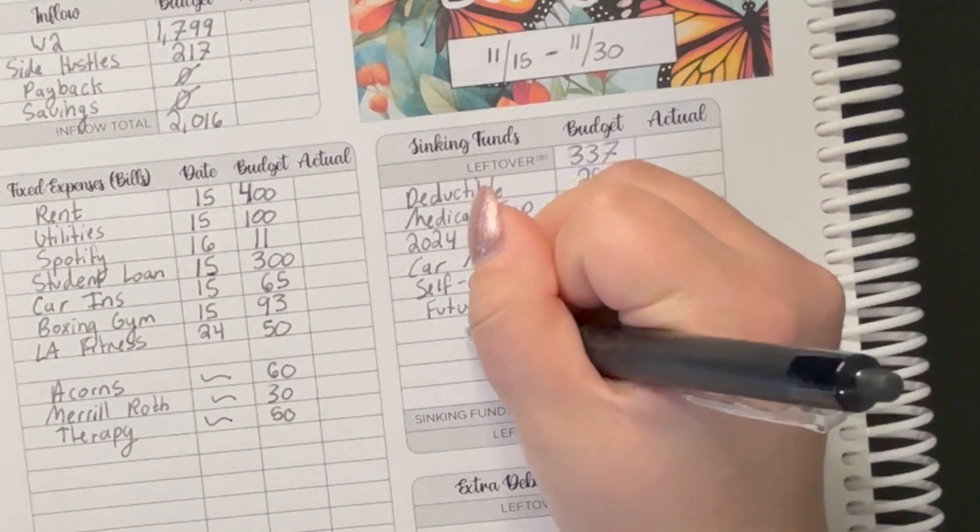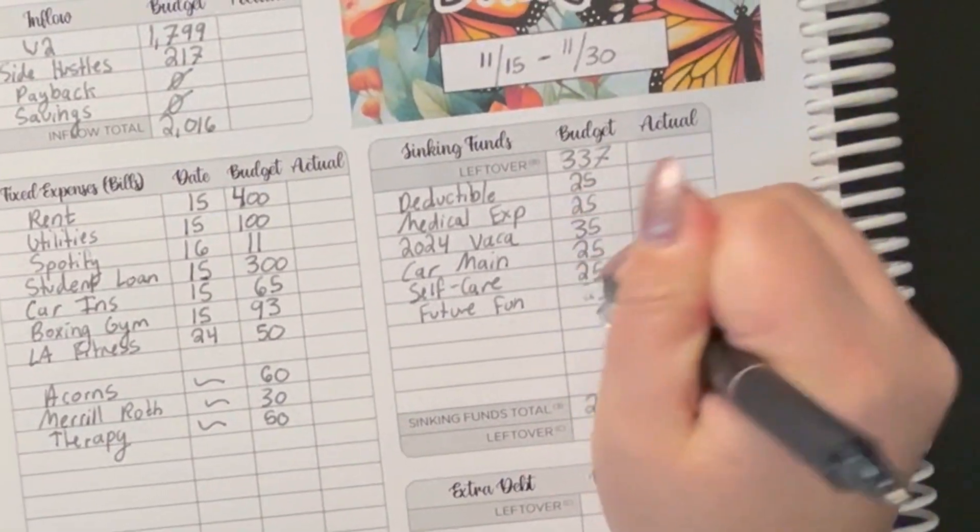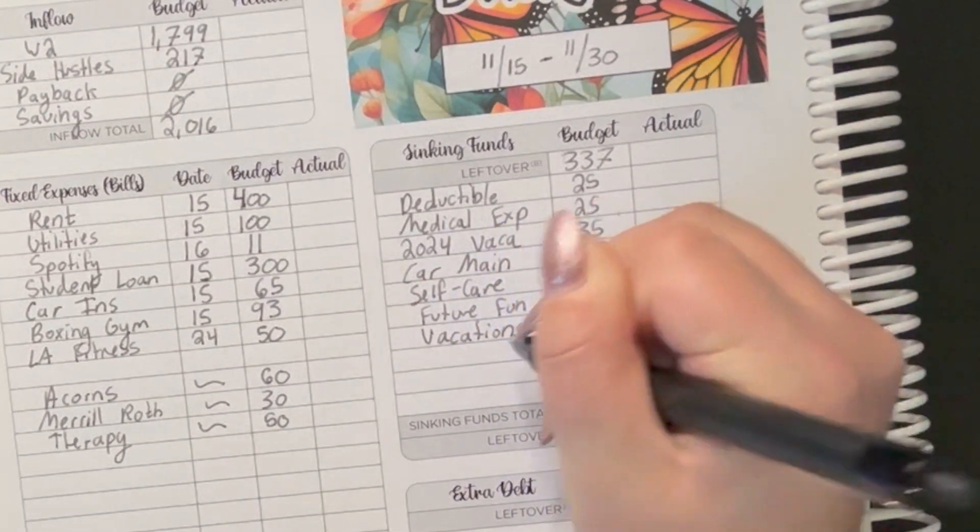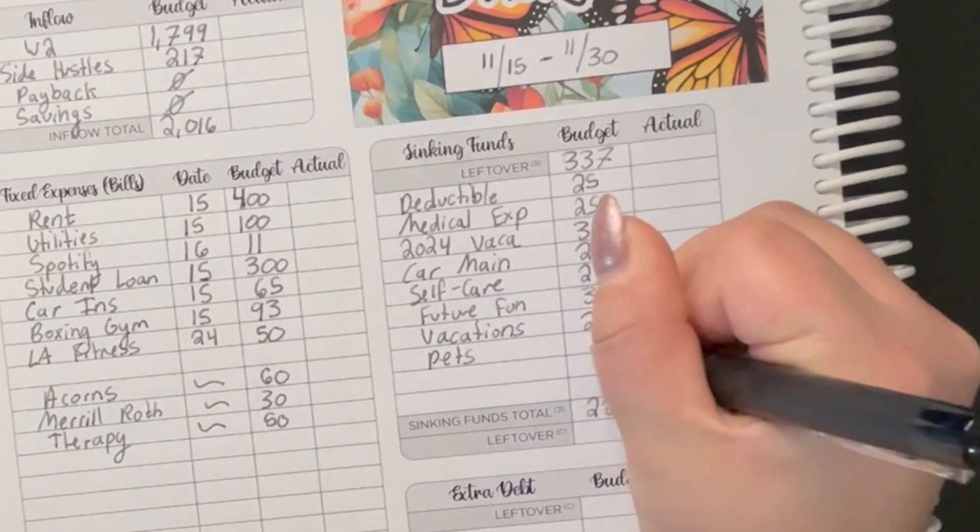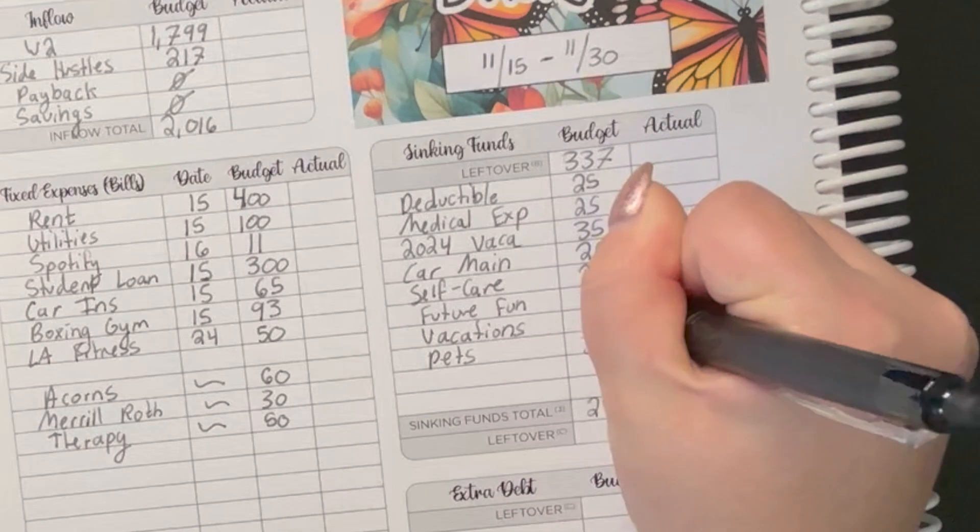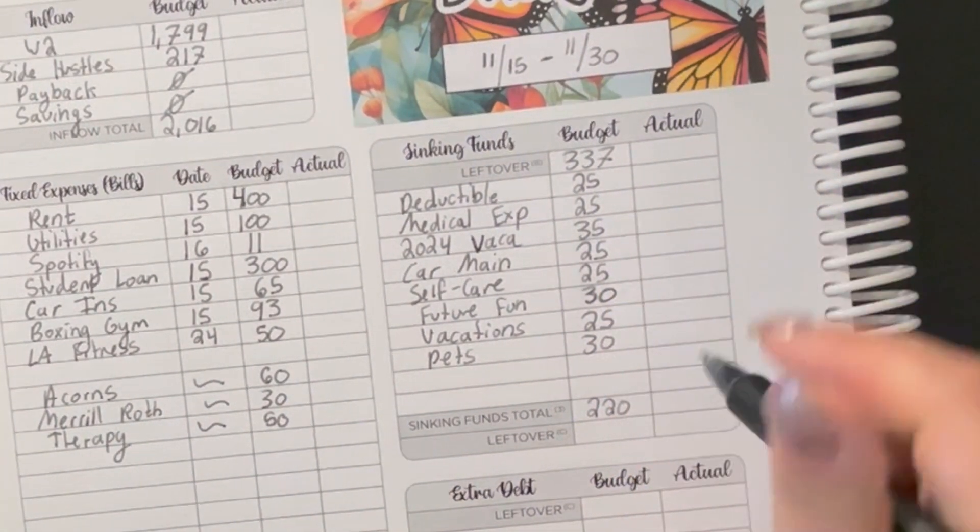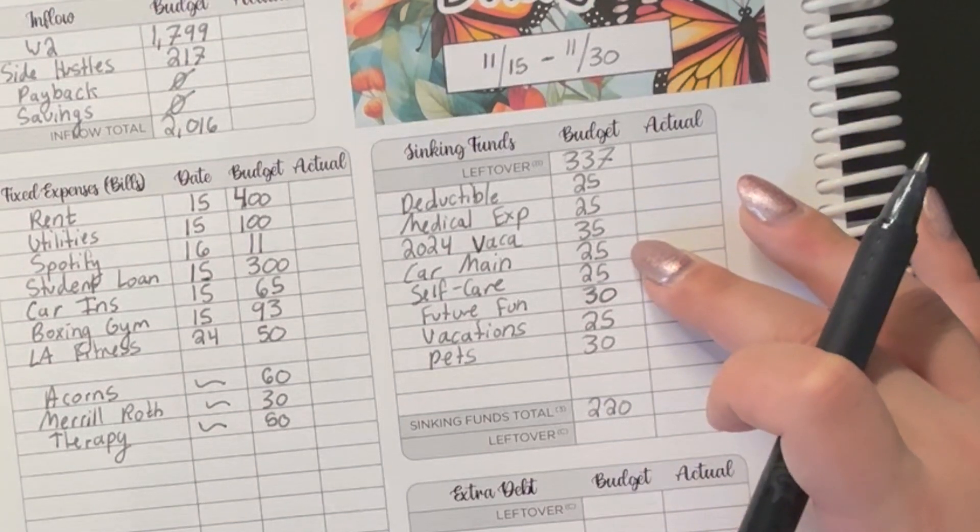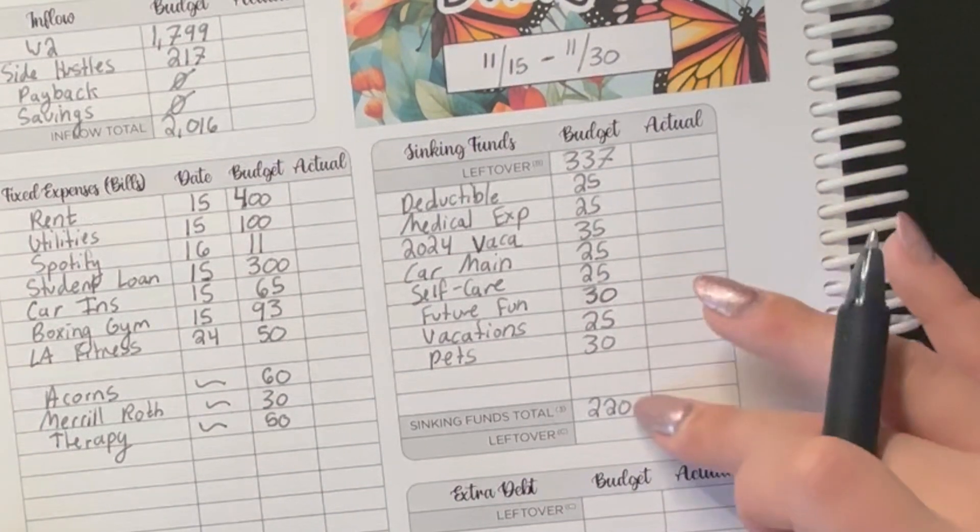Future fun, we're doing $30. Vacations. I have one more vacation to visit my grandma at the beginning of December. So I'm just budgeting for anything like that, $25. And then pets, we're going to do $30. So I guess whatever's left in the vacation fund for this year, we'll probably roll into the 2024 vacation and then start a 2025 vacation fund. So let's add up to make sure that's all correct. $25 plus $25 plus $35 plus $25 plus $25 plus $30 plus $25 plus $30 equals $220. Perfect.